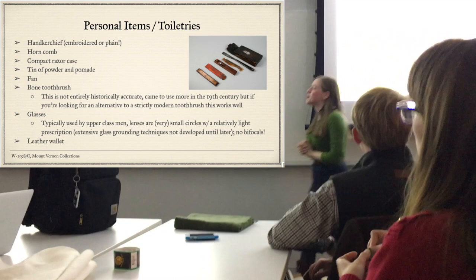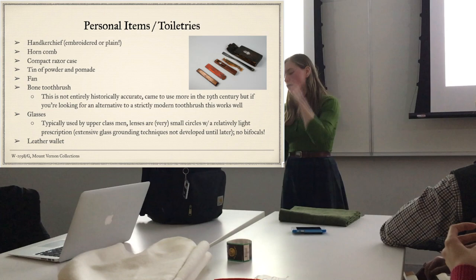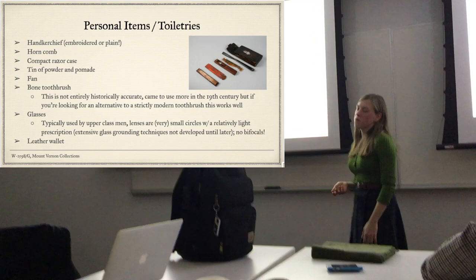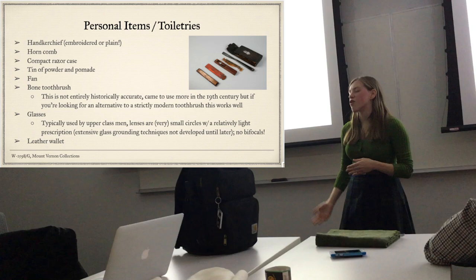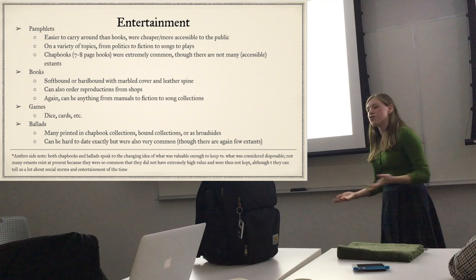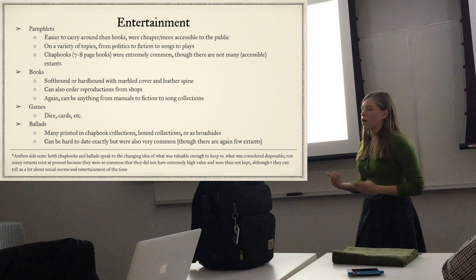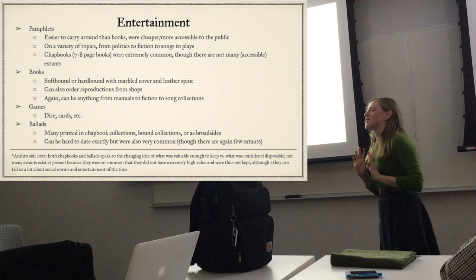For entertainment, there's more paper. First, pamphlets, which are easier to carry around than books - usually folded paper, or chapbooks, which are one piece of paper folded into eighths. They are more accessible to the public, very cheap, and we have records of almost every class being able to purchase pamphlets. Topics ranged from politics to prose to instructional manuals, usually less than a hundred pages.